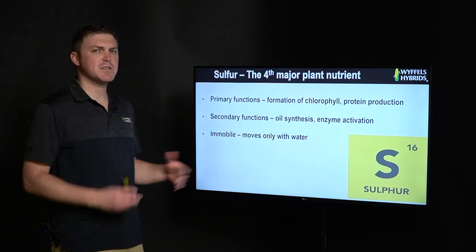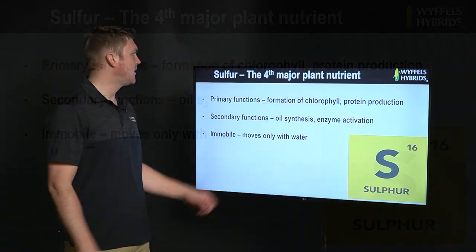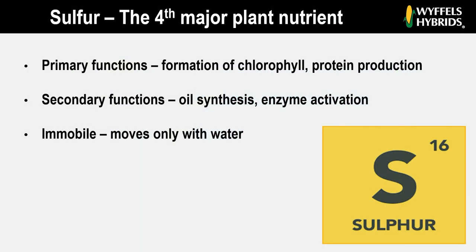First I want to spend some time talking about sulfur. A lot of times it gets referred to as the fourth major macronutrient, just in terms of how much a corn crop actually uses compared to the other three. Primary functions of sulfur: the big one is formation of chlorophyll — that's what makes photosynthesis work, absolutely important to not only corn but all plants. Also protein production along with nitrogen. Some secondary functions would be oil synthesis and enzyme activation.